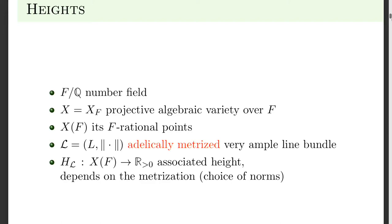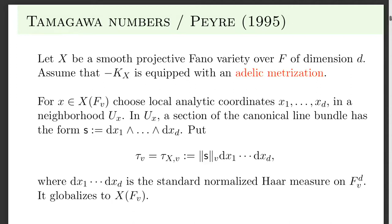In 1995, Emmanuel Peyre introduced a Tamagawa measure and Tamagawa number of Fano varieties. It's actually quite general — you don't need the Fano property at all. All you need is a metrization of the canonical or anti-canonical line bundle. The way this construction works: you pick a point, you introduce local analytic coordinates — either the p-adics or the reals or the complex numbers, it doesn't matter. Then you look at the local section of the canonical line bundle.